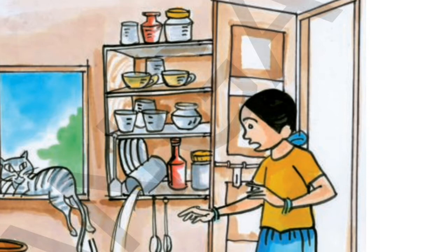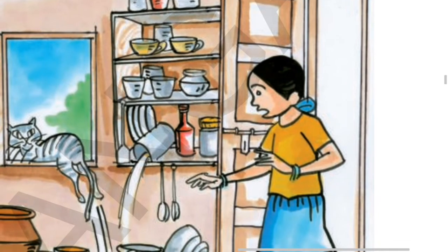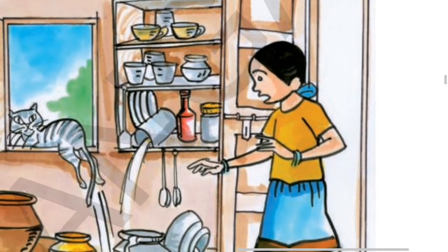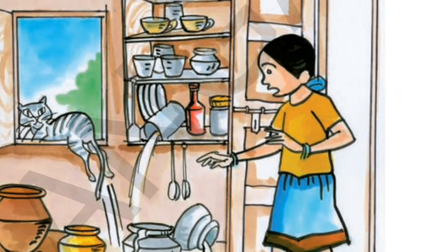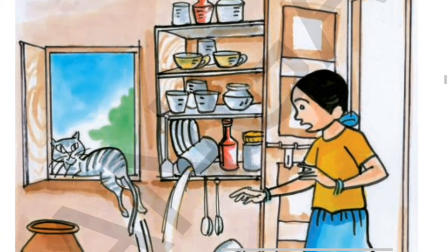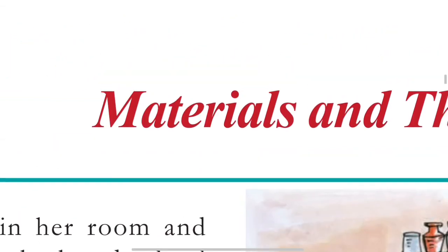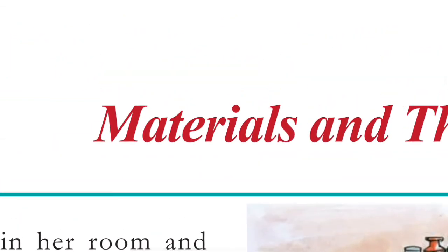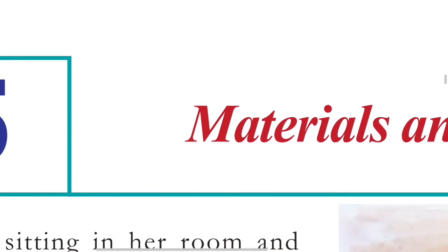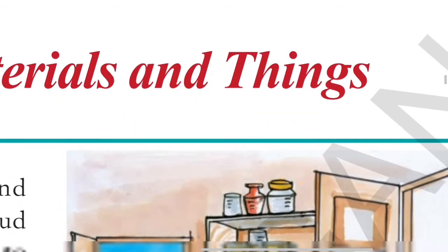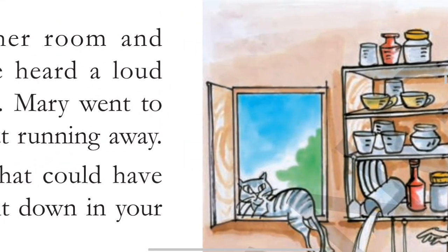Why are some things broken and why are some other things not broken? The things are made of different materials — can you guess? Different materials. This is the fifth chapter we are going to talk about: Materials and Things.